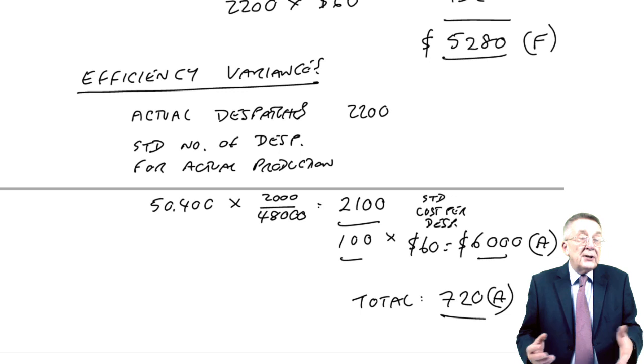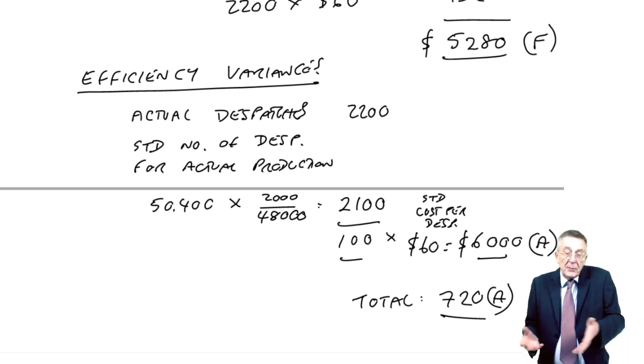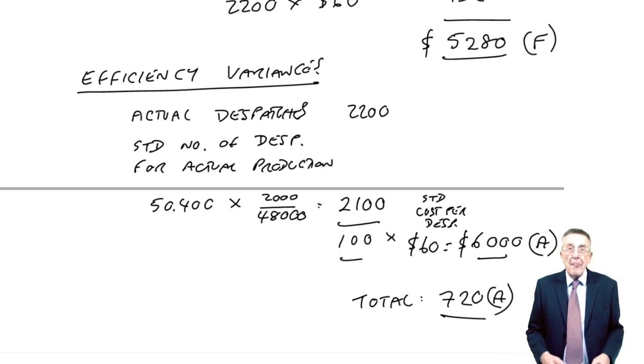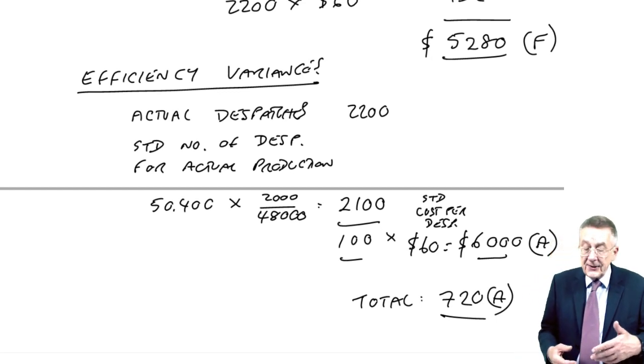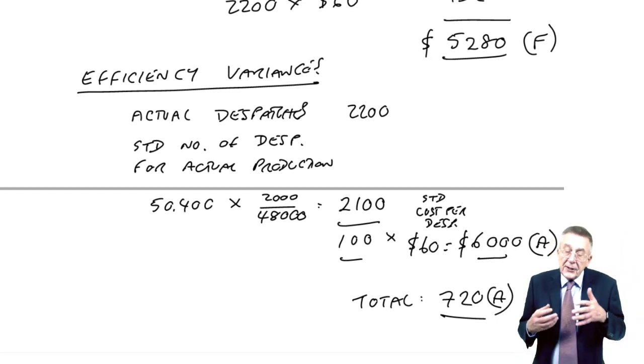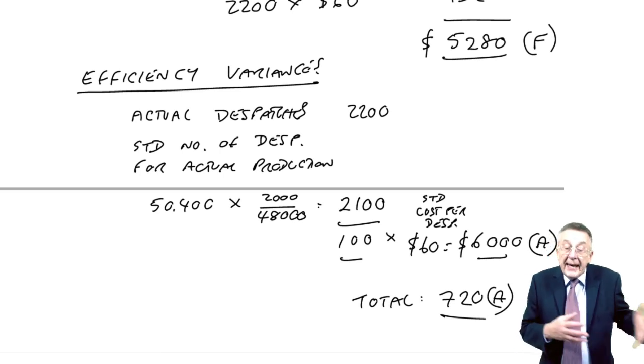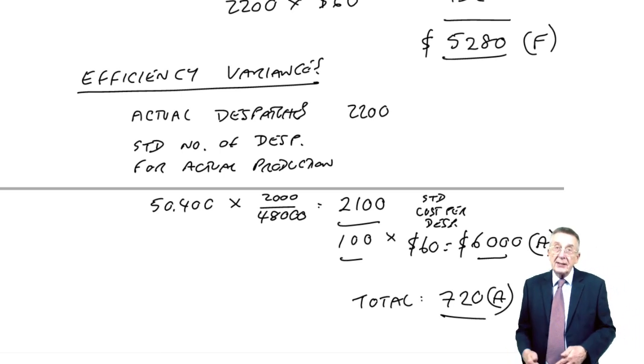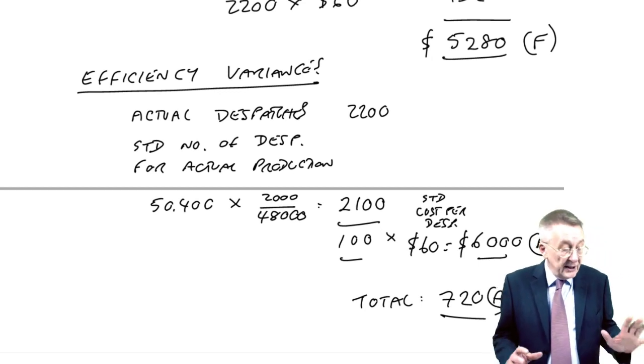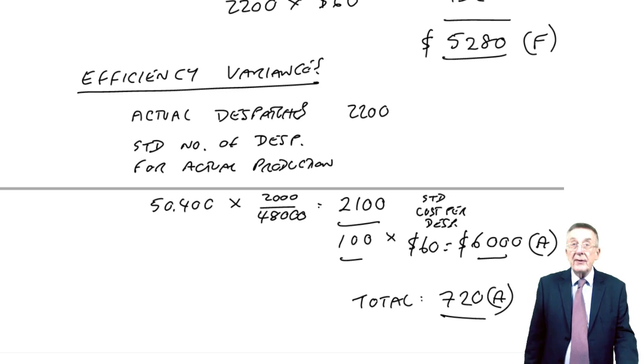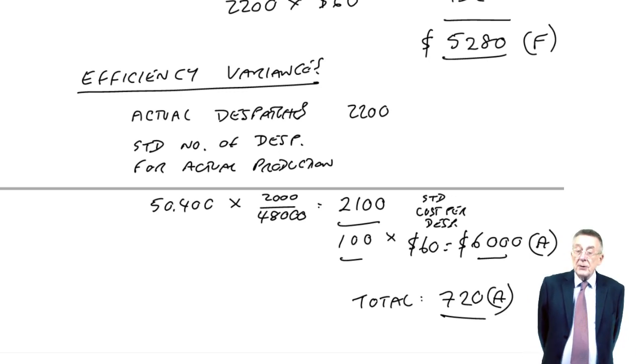There we are. It's just the same as labor, except it's per dispatch instead of per hour. Or it's the same as materials. It's expenditure and usage. But instead of per kilo, it's per dispatch. So, there's not really anything new. As I said before, if you understand what's happening with variances, then there's not really much excuse for not being able to solve this.